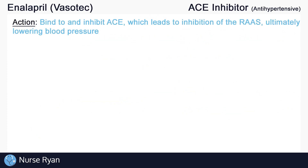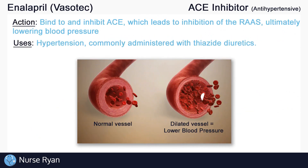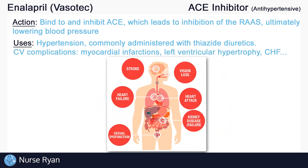Enalapril is most often used in the treatment of hypertension, and is commonly administered alongside thiazide diuretics for an additive effect. Thiazide diuretics also help to remove fluid and lower blood pressure, and have been shown to work well with ACE inhibitors. Cardiovascular complications such as myocardial infarctions, left ventricular dysfunction, and congestive heart failure are often caused in part by elevated blood pressure, so enalapril can also be used to reduce the risk of these complications.